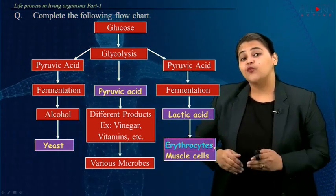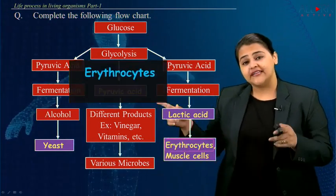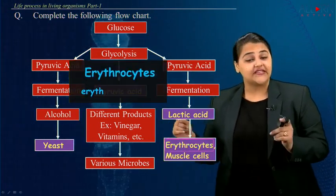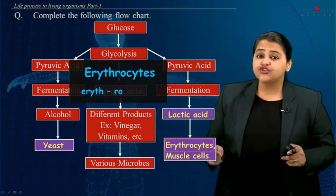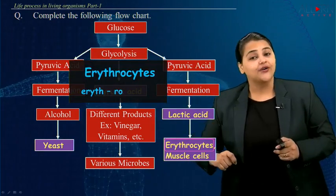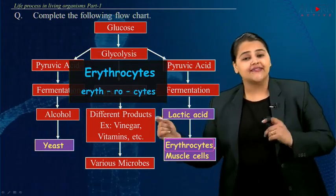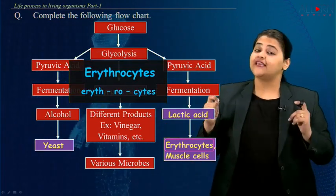So we have the word erythrocyte — let's break it down: e-r-y-t-h, then r-o, then c-y-t-e-s. So the word is erythrocytes.